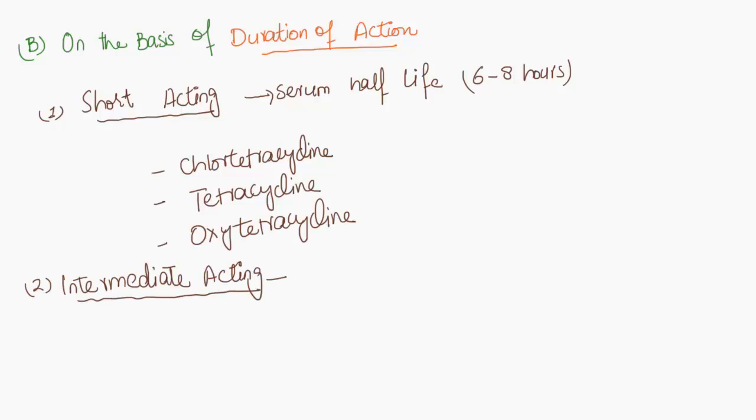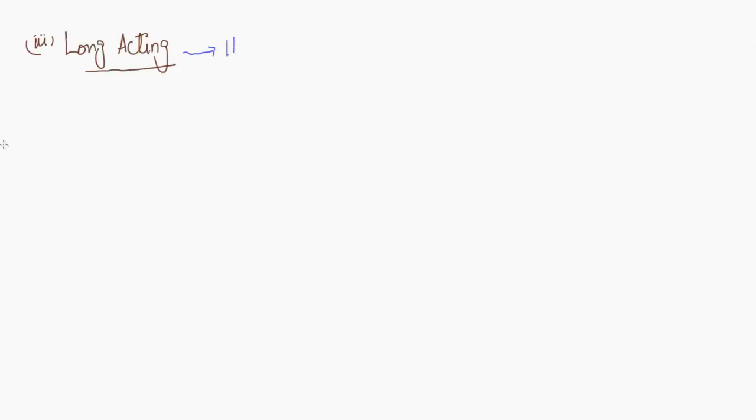Intermediate-acting tetracyclines have a half-life of 12 hours, including demeclocycline and methacycline. Long-acting tetracyclines like doxycycline and minocycline have a half-life of 16 to 18 hours.